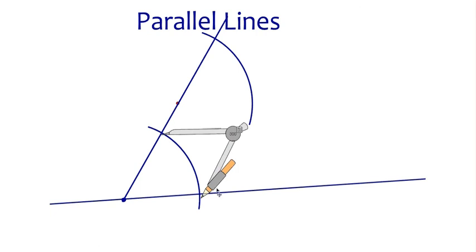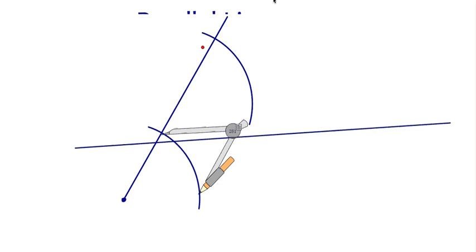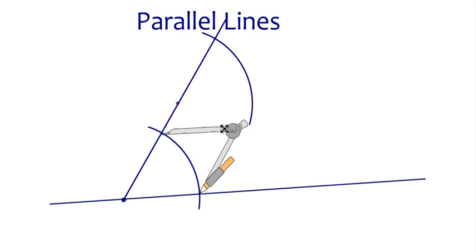So we'll set our compass to the exact distance between these two points. My compass says they're 281 units apart. And so I'll go ahead and place the spike of the compass at this point where these arcs intersect the line.